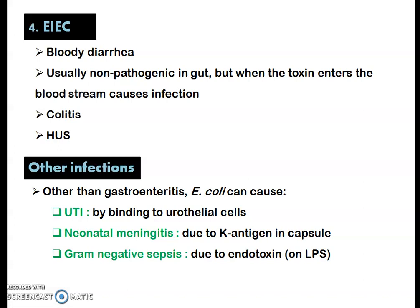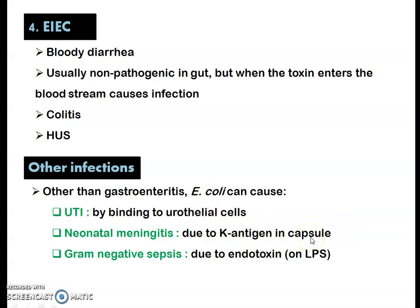Other infections caused by E. coli include UTI (urinary tract infection), caused by the binding of E. coli to urothelial cells. E. coli can also cause neonatal meningitis when entering brain cells, due to the K antigen present in the capsule. Another infection is gram-negative sepsis, caused by the endotoxin.